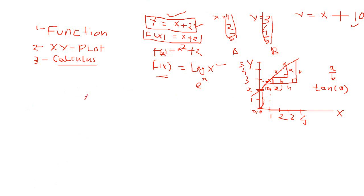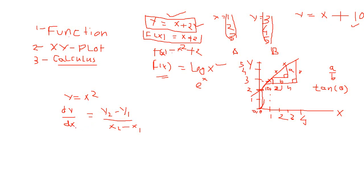Say for example the function we want to differentiate is X squared, so Y equal to X squared. We want to differentiate Y with respect to X — that is DY by DX. Differentiation is like DY representing change in Y — something like Y2 minus Y1 — and DX representing change in X, something like X2 minus X1. So it's the change in Y with respect to change in X. That is what we do in differentiation, and that is why we call it differentiation — it comes from the word difference.